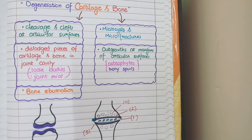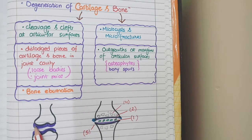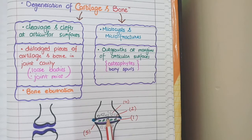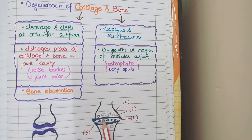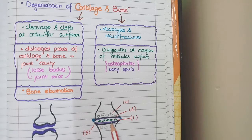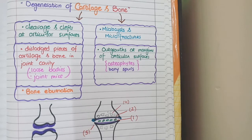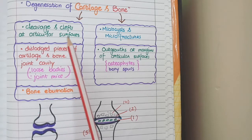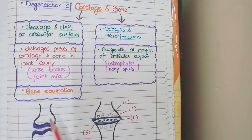Thirdly, as the articular cartilage is being degenerated — as you can see here in this diagram, this is the normal articular cartilage — the bony surfaces will come into friction with each other. This friction caused by bone surfaces against each other will turn the surfaces of bone to resemble polished ivory. These bone surfaces that resemble polished ivory are known as bone eburnation. So due to the degeneration of cartilage in osteoarthritis, you see cleavages and clefts at articular surfaces, you see loose bodies or joint mice, and you see bony eburnation.